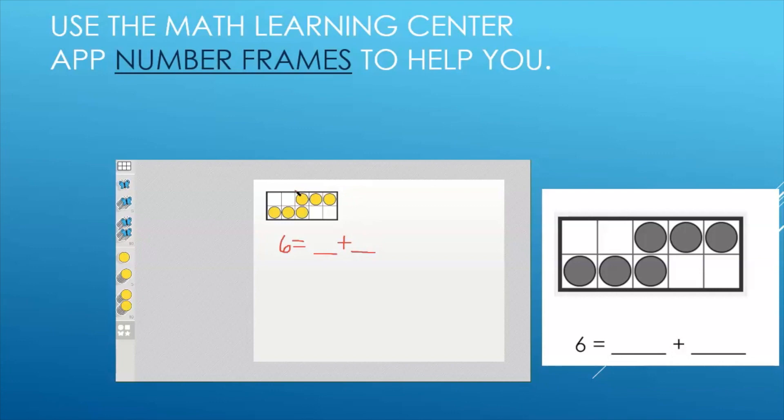I know that I have 1 set of counters and 2 sets of counters. So now it's your turn to figure out what 2 numbers we're adding together to get 6 and complete the remainder of the problems on your paper. Remember, you can use the Bridges app to help you figure out how many.